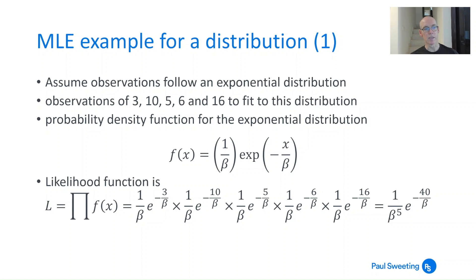You need to first generate your likelihood function, which is the product of f(x) for each of those observations. So you plug those five numbers in for x and get this product: 1/β * e^(-3/β) times 1/β * e^(-10/β) and so on. That gives you 1/β^5 * e^(-40/β).